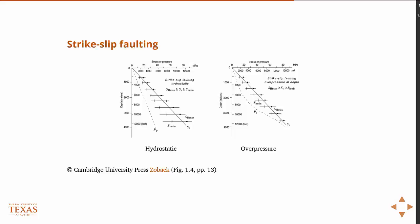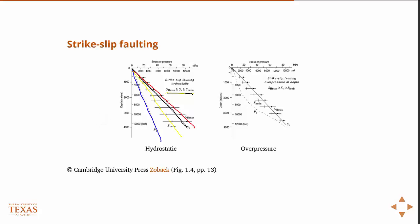In a strike-slip fault, according to Anderson fault classification, SH max is greater than the vertical stress, which is greater than SH min. Here's the vertical stress, SH max, SH min, and pore pressure, and we see the same phenomenon here. The pore pressure changes with depth, causing SH min to also change with depth.